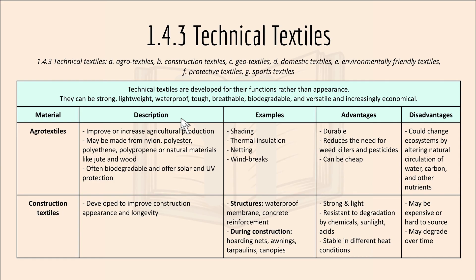Agrotextiles are used to improve or increase agricultural production. They can be made from nylon, polyester, polyethylene, polypropylene or natural materials like jute and wood. They are often biodegradable and offer solar and UV protection. Examples include shading, thermal insulation, netting and windbreaks. An advantage is that they are durable, reduce the need for weed killers and pesticides and can be cheap. A disadvantage is that they could change ecosystems by altering the natural circulation of water, carbon and other nutrients.